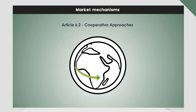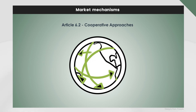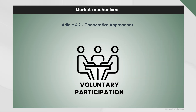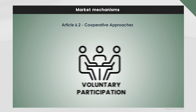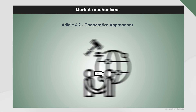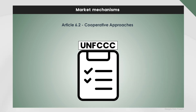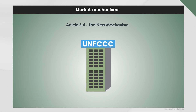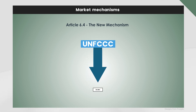Article 6.2 allows for the international transfer of mitigation outcomes. Participation is voluntary, but countries must comply with UNFCCC rules and report on these transactions to the UNFCCC. Article 6.4, on the other hand, generates Article 6.4 emission reductions and is centralized, with oversight by the UNFCCC's Article 6.4 supervisory body.